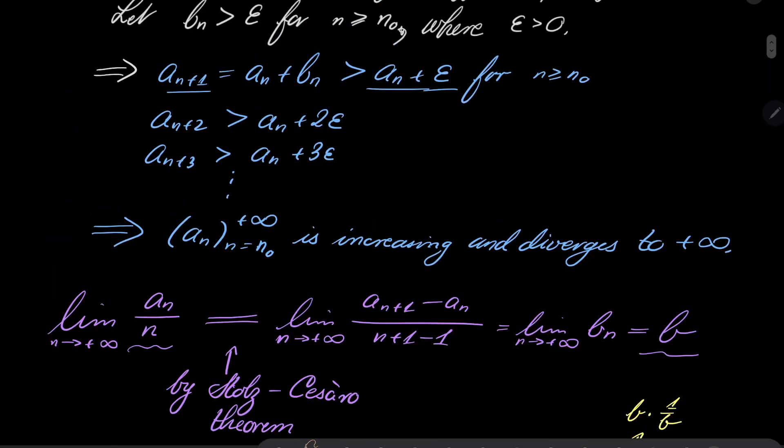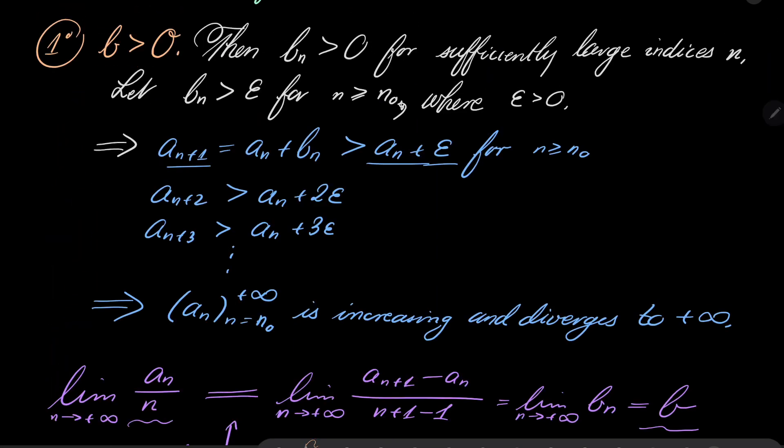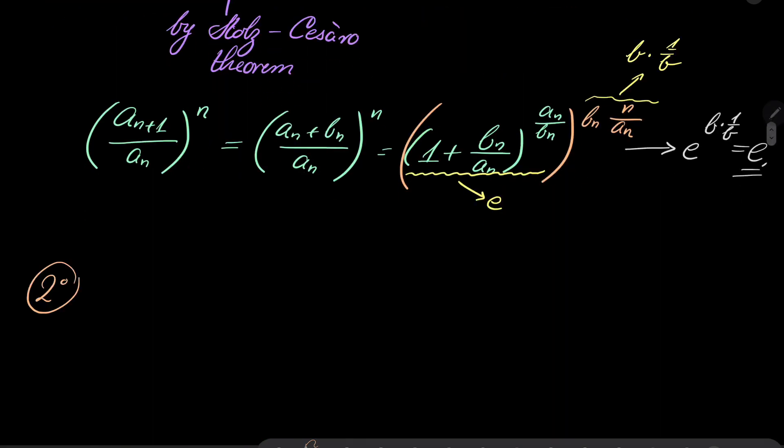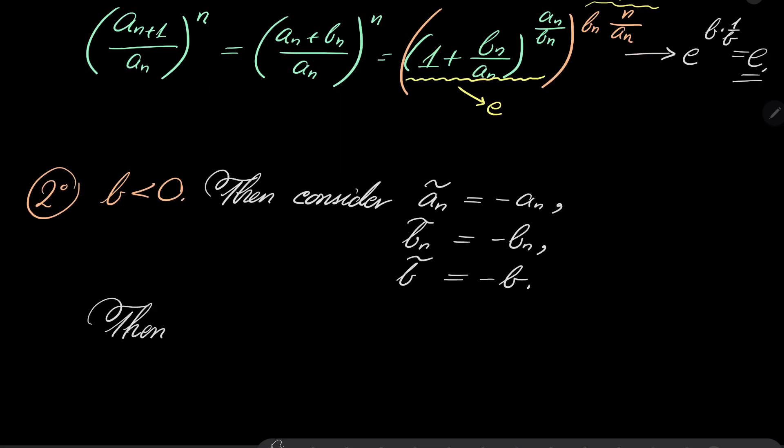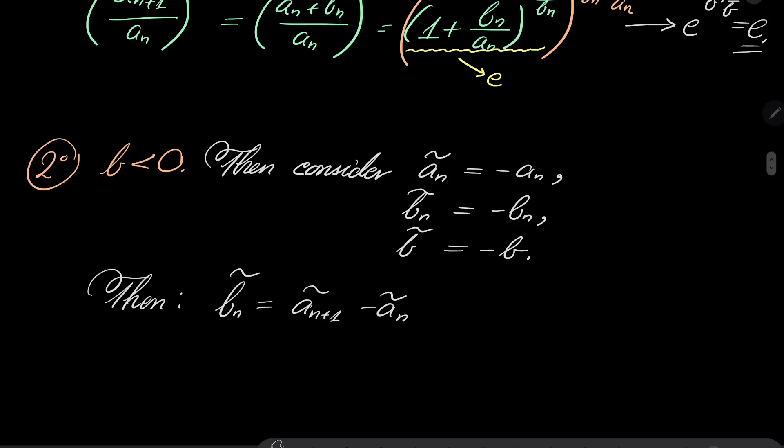But now, let's consider second case, because it worked all well, provided that b is greater than 0. Second case, b is less than 0. But notice that then, consider, let's consider a_n tilde to be just minus a_n. Consider b_n tilde to be minus b_n. And consider b tilde to be minus b.